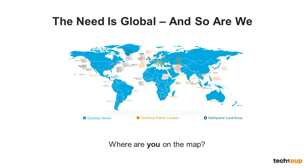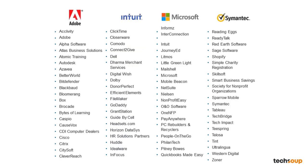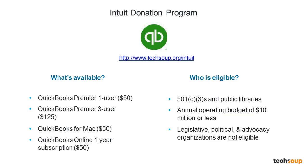We have people calling in from Louisiana, Michigan, Philadelphia, California, Oregon — all over the U.S. We partner with several corporations: Adobe, Intuit, Microsoft, and Mantech — these are the partnerships that help make our work possible. Today's webinar is more focused on Intuit and our partnership with them. These are the offerings we have on the TechSoup website, and here you can see who is eligible. For more detail, visit www.TechSoup.org/Intuit.